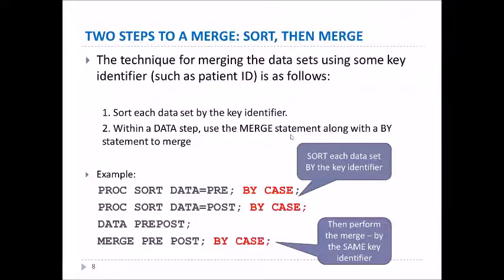There are two steps to a merge. First we sort the data, and then we merge the data. In the code below you'll see you have proc sort on both the pre and post datasets by the key variable — in this case it's called case. And then following that, you do the merge using a data step and a merge statement, where you say merge pre post and also by case, that key identifier.